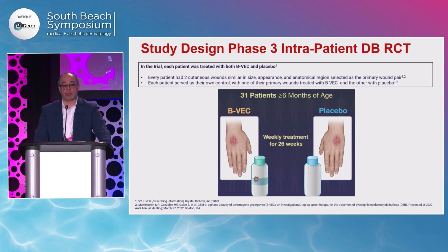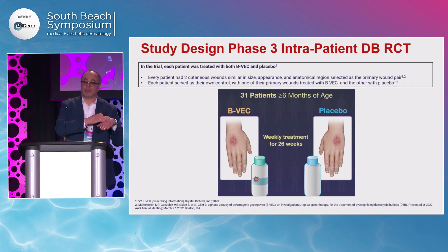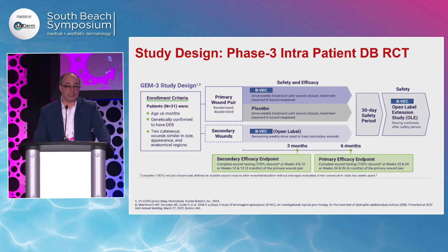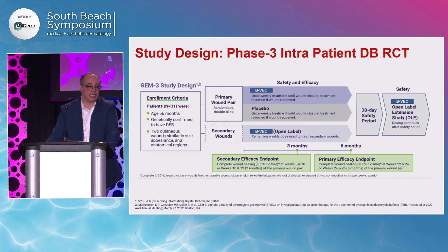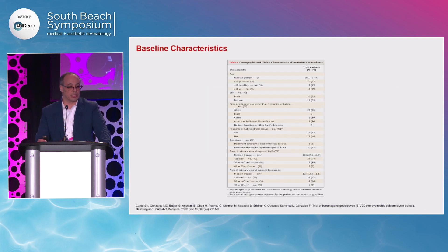The trial is an intrapatient double-blind randomized controlled trial. To be eligible, each patient must have at least two wounds. Because it's intrapatient, the active treatment is applied on one wound and the placebo on the other wound in the same patient. Patients had to be at least six months of age, with confirmed dystrophic EB and two cutaneous wounds similar in size, appearance, and anatomical region. The primary endpoint is achievement of complete wound closure at six months; the secondary endpoint is achievement of complete wound closure at three months. Baseline characteristics were similar to the previous trial — mostly children.